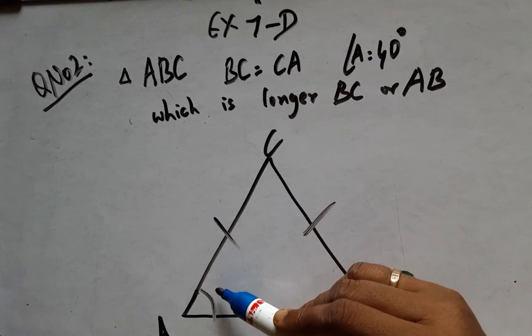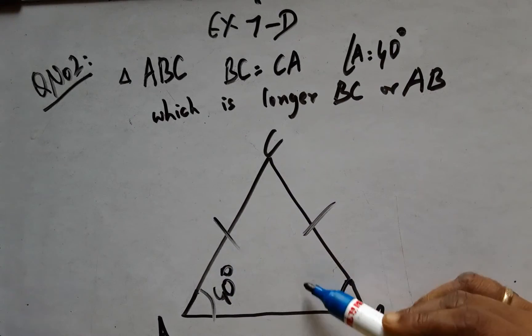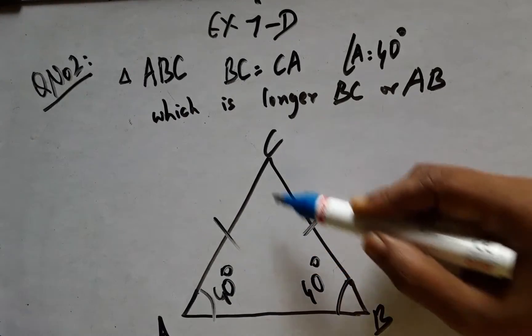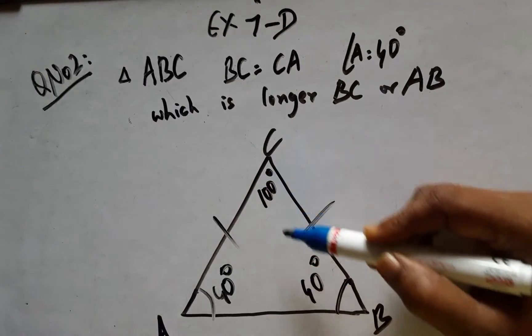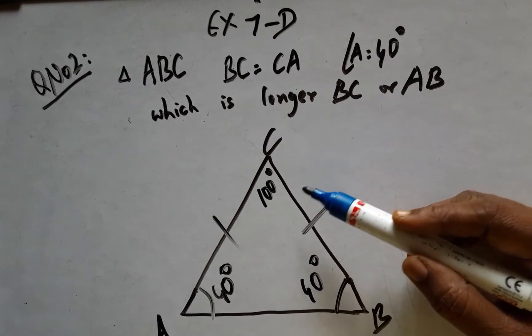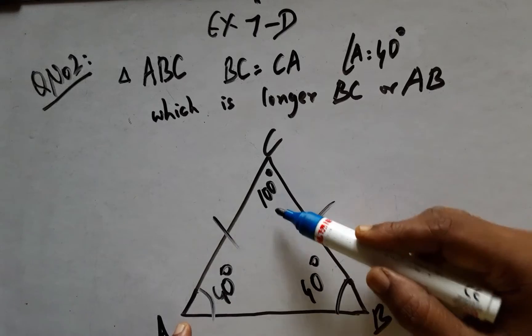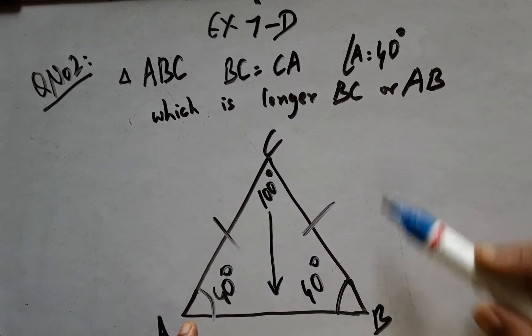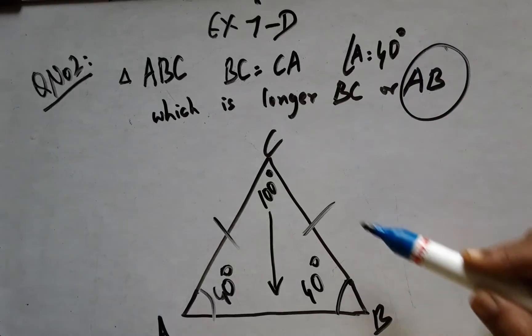Angle A is 40 degrees, which means angle B is also 40 degrees. Now by angle sum property we have angle C as 100 degrees. This means it is an obtuse angle triangle. The side opposite the largest angle is the longest, so AB is the longest of all.